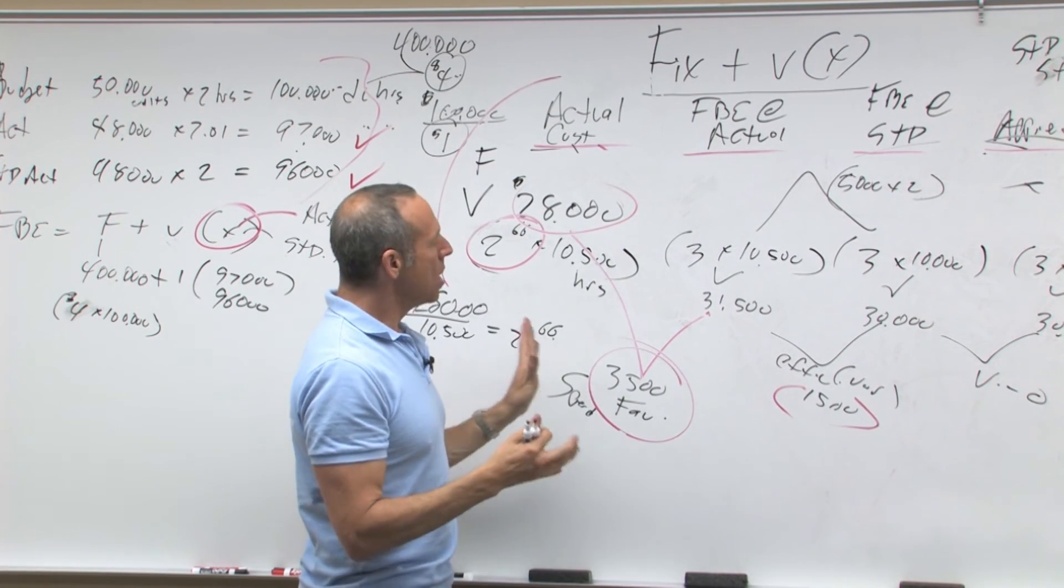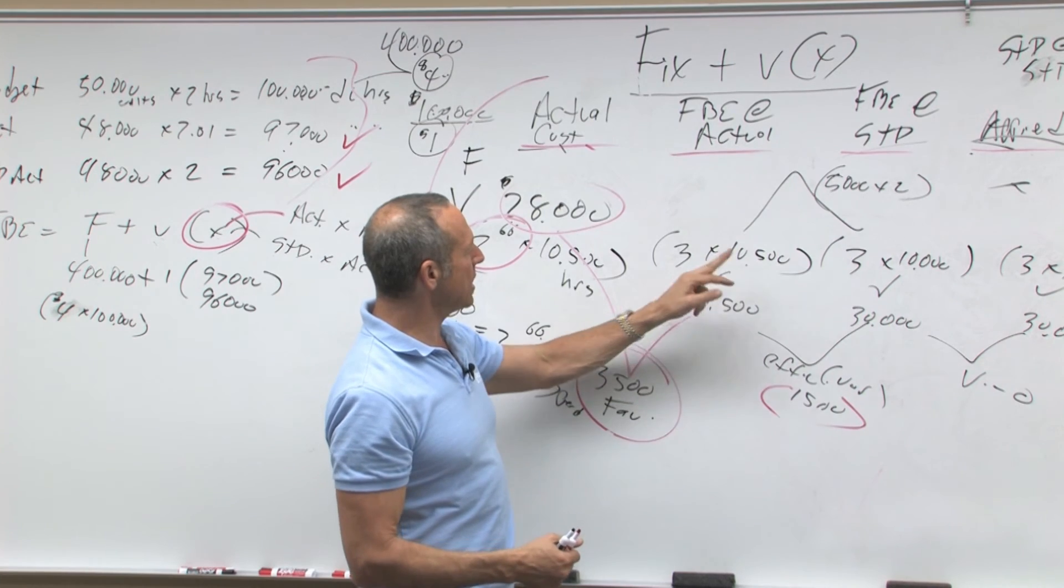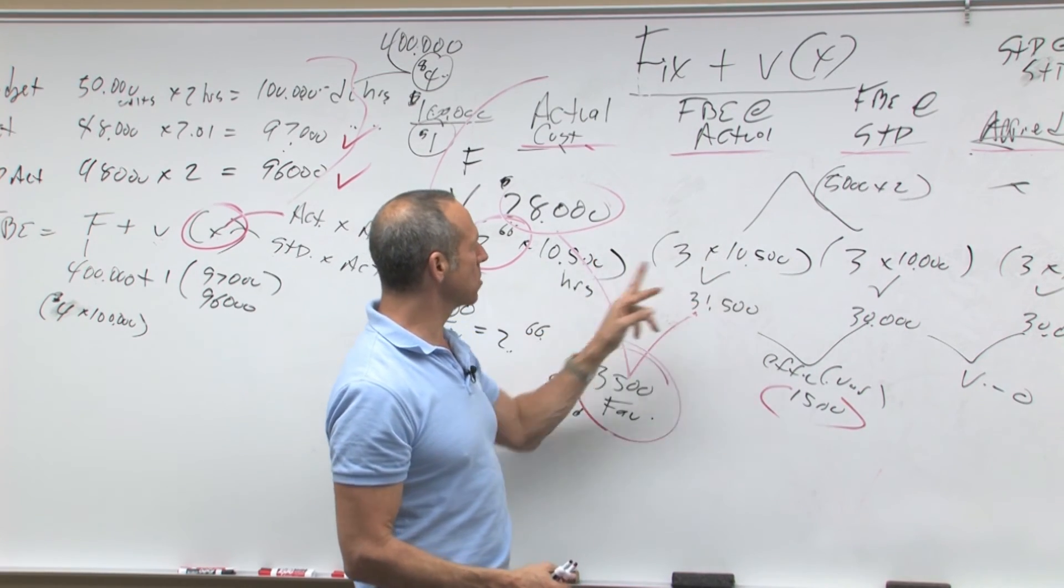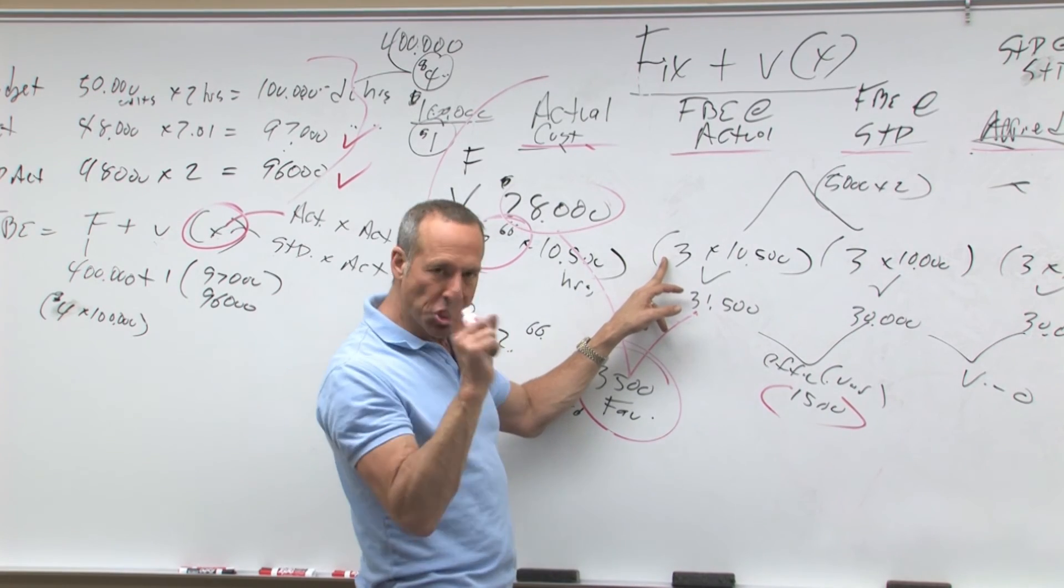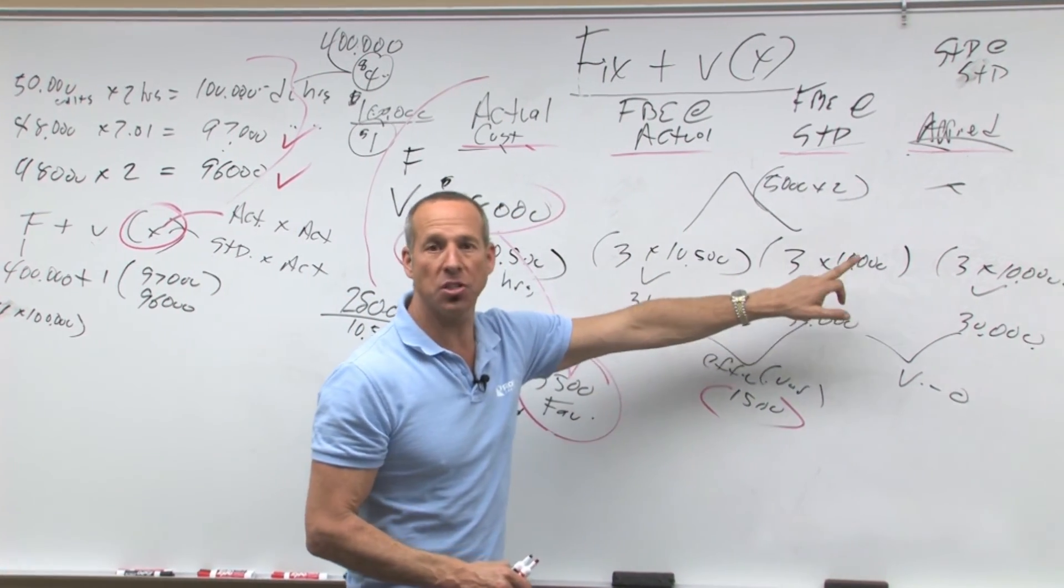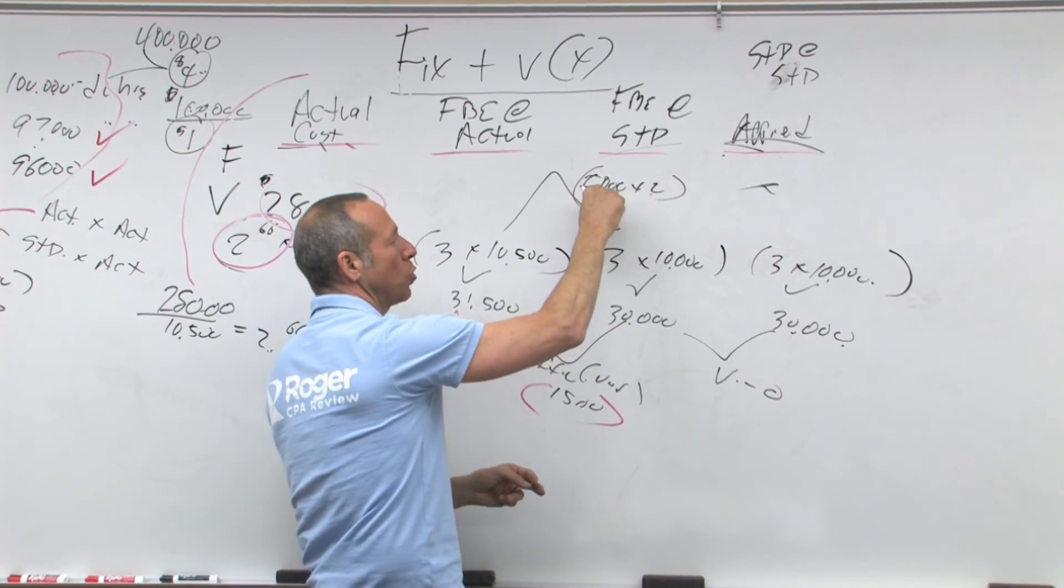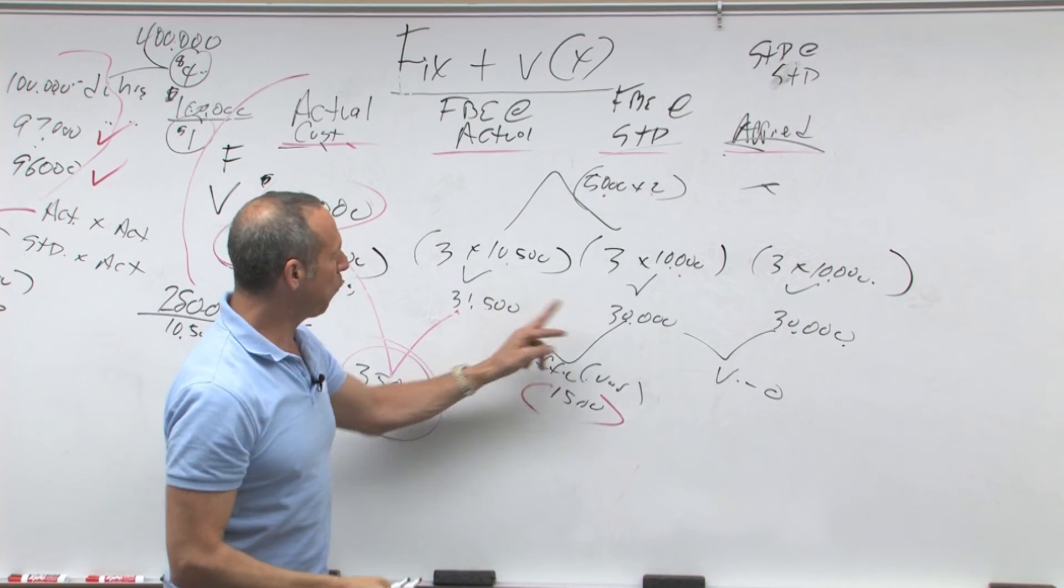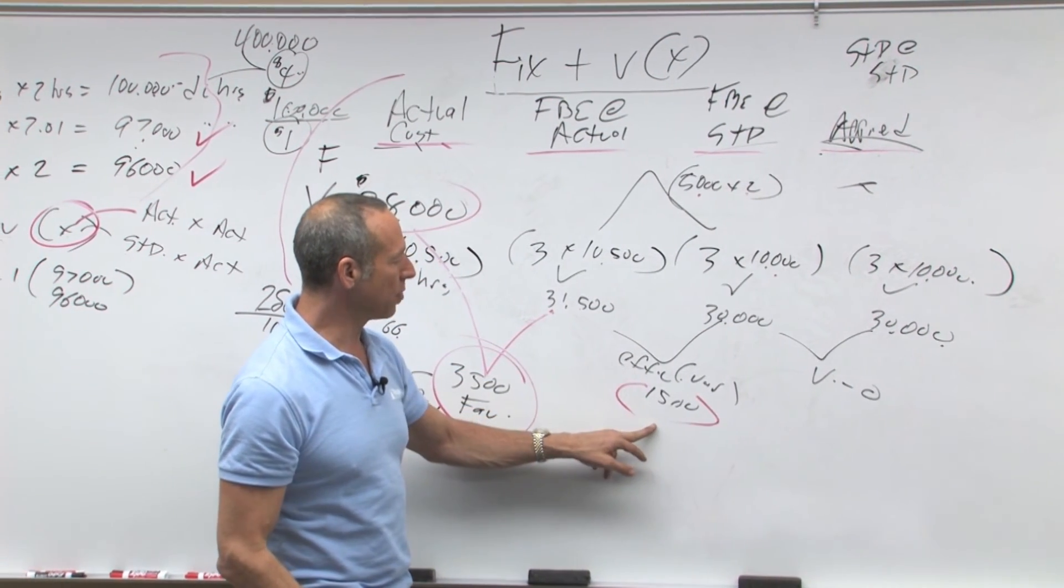Then moving on. We actually used 10,500 hours and $3 was our budget. We should have used three at 10,000, which is standard allowed for actual production. Therefore, it's off by 1,500. That is 1,500 unfavorable.